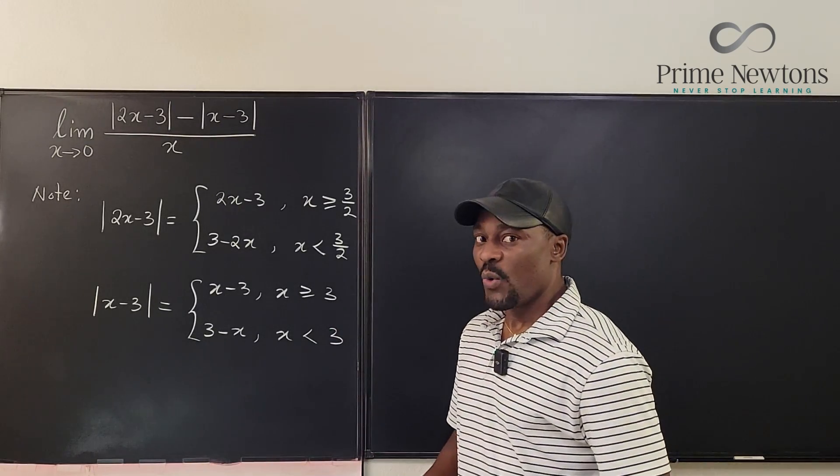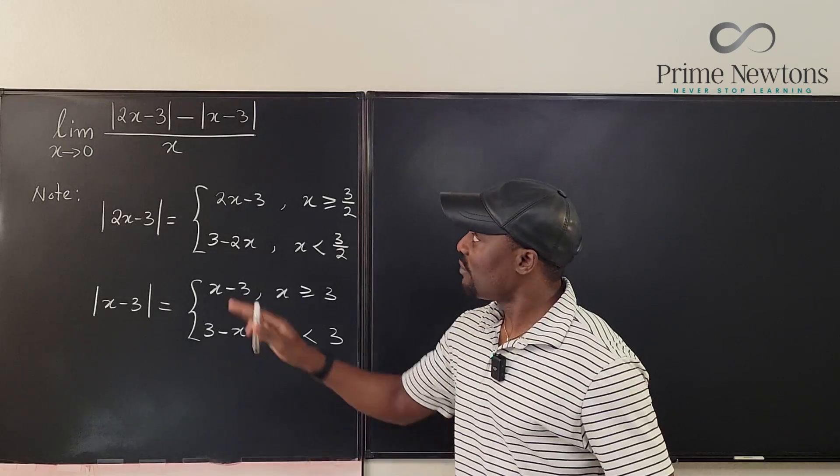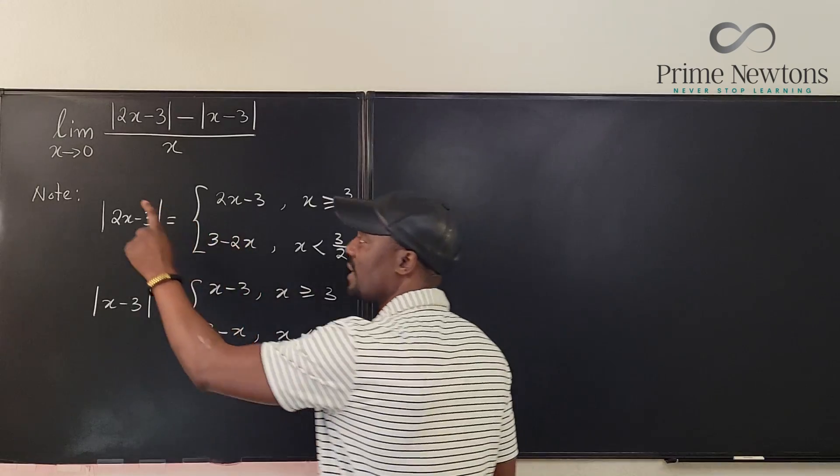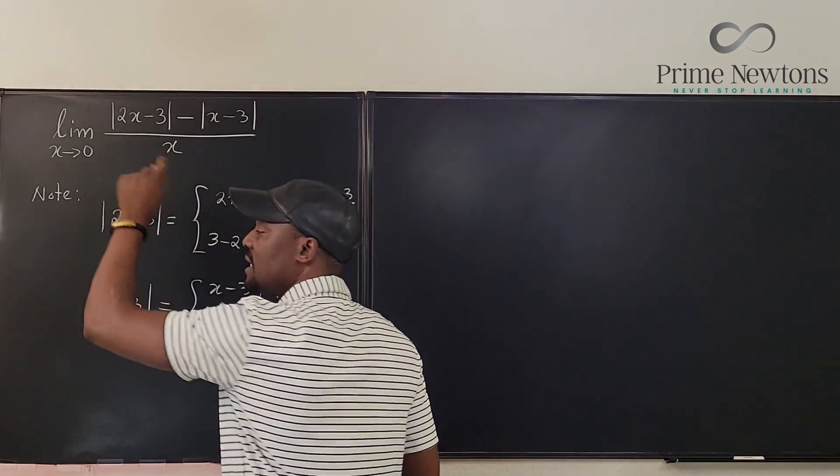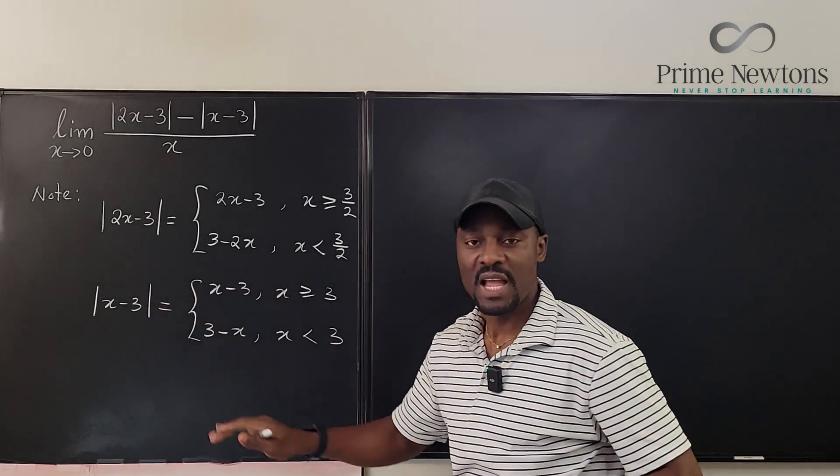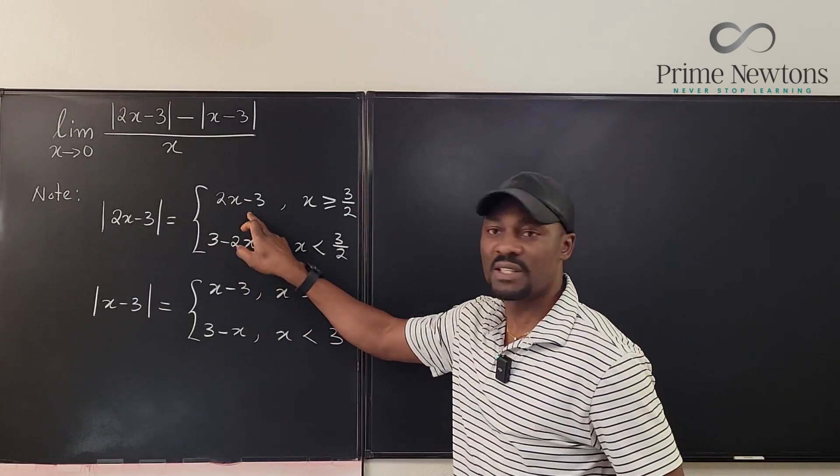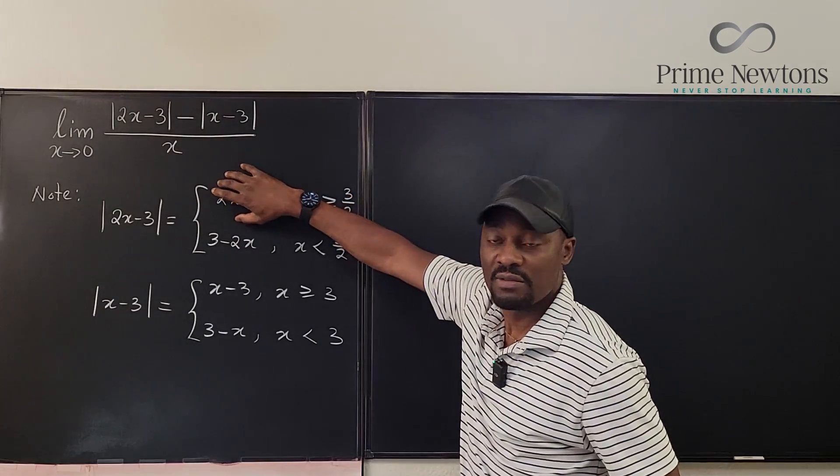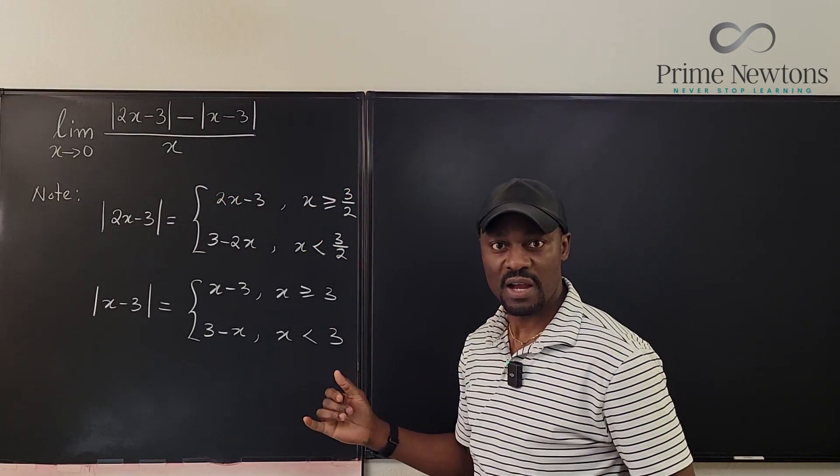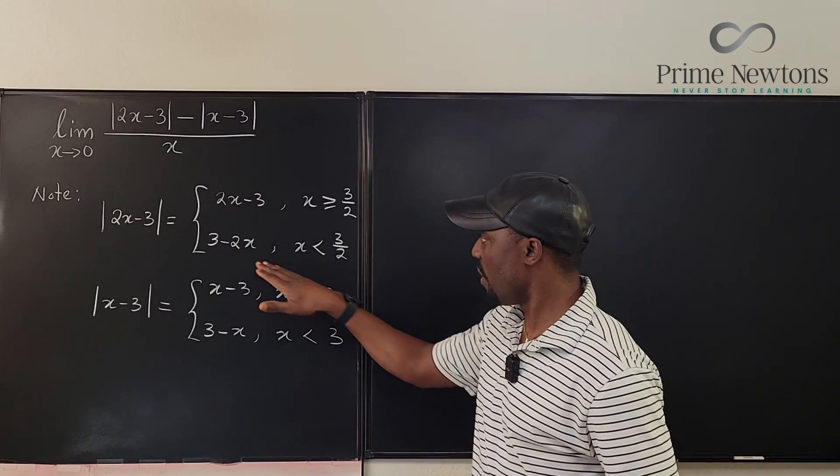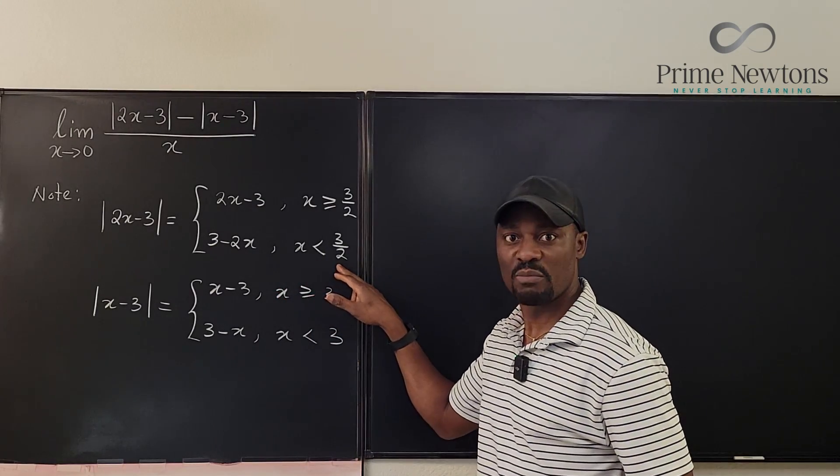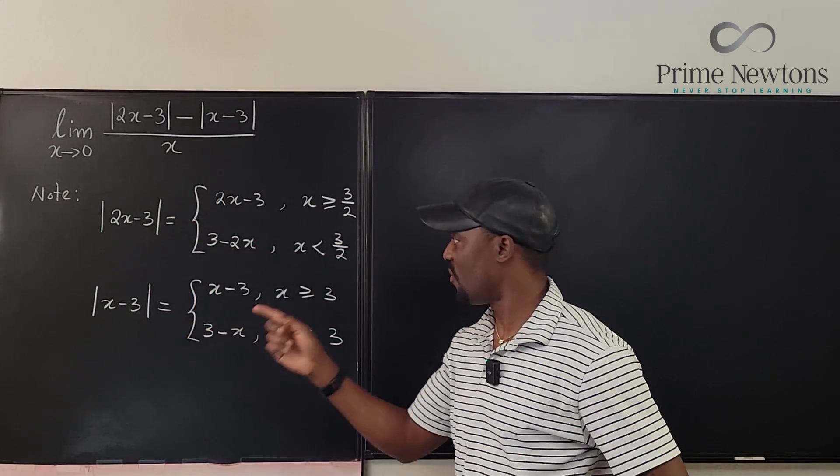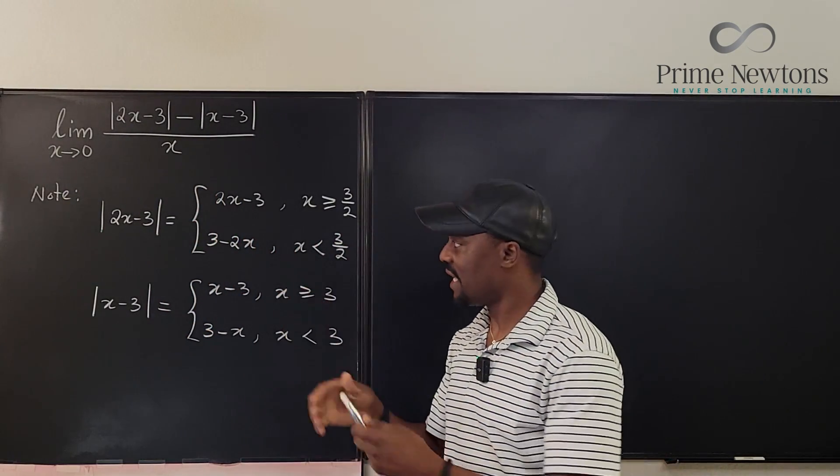Now what do you need to do? Well, you will have to rewrite this limit, but you carefully choose what you need. Remember we're talking about as x approaches zero. So let's go to the first part. As x approaches zero, are we dealing with this guy or this guy? Well, look at this point. This equation is relevant when x is greater than 1.5, and this equation is relevant when x is less than 1.5. We're talking about zero. So which of these equations is relevant to zero? It is the lower one. So we're taking this guy.